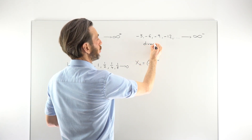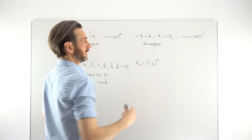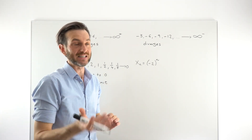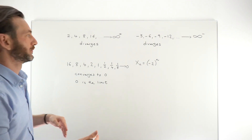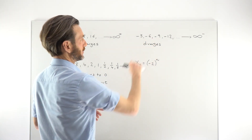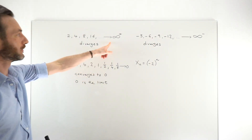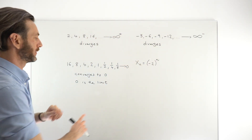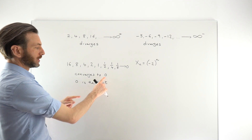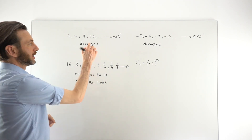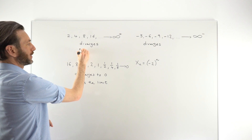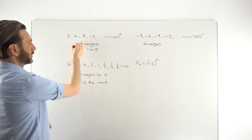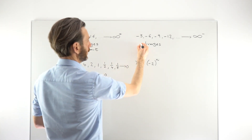Notice that we don't say a sequence converges to infinity, because convergence means tending to a number, and infinity is not a number — it's just an idea, and there are different types of infinity. So these sequences are just said to diverge. That first geometric sequence diverges to positive infinity; the arithmetic one diverges to negative infinity; the halving sequence converged to zero, which is its limit. Divergent means there's no limit.